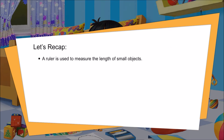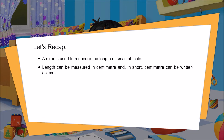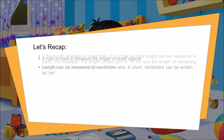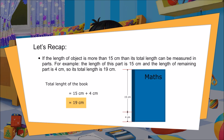Let's recap. A ruler is used to measure the length of small objects. Length can be measured in centimeters, and in short, centimeter can be written as cm. If the length of an object is more than 15 centimeters, then its total length can be measured in parts. For example, the length of this part is 15 centimeters and the length of the remaining part is 4 centimeters, so its total length is 19 centimeters.